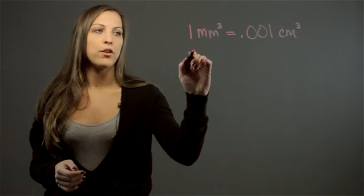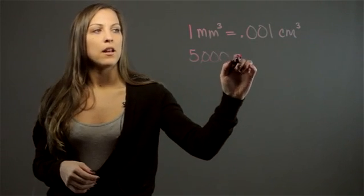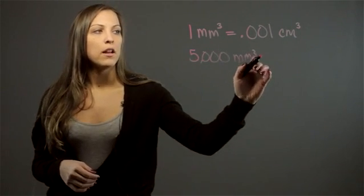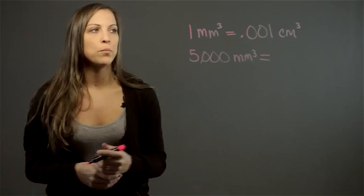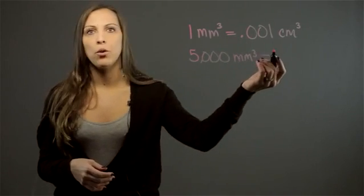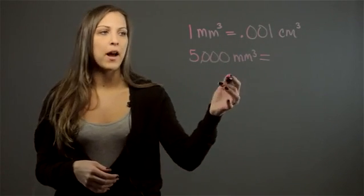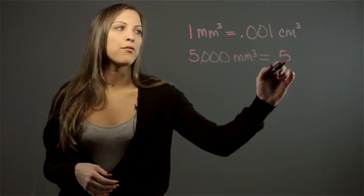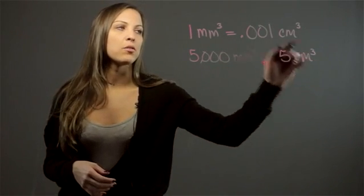So for example if you had 5,000 millimeters cubed, in order to get the number of centimeters cubed you're multiplying by .001 but that's the same as dividing by a thousand. So when we divide 5,000 by 1,000 we're going to get 5 centimeters cubed.